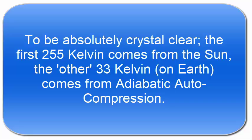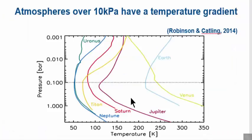So in other words, when you descend through an atmosphere that is over 10 kPa in pressure, you get warming. That's it. Now we know that atmospheres over 10 kPa have a temperature gradient. We know this from Robinson and Catling, their paper in 2014. If you're interested, you should look at that paper.